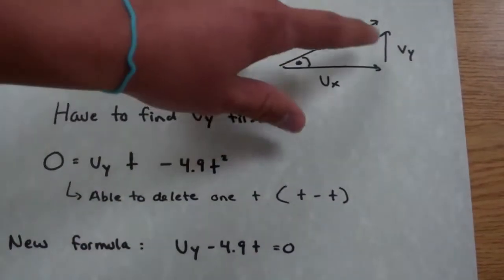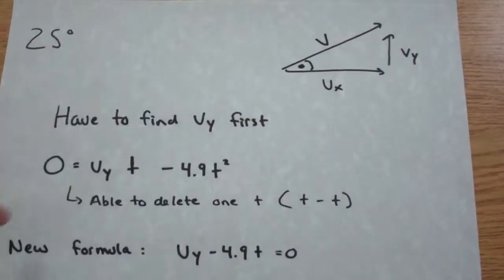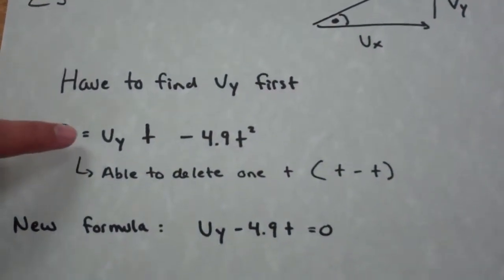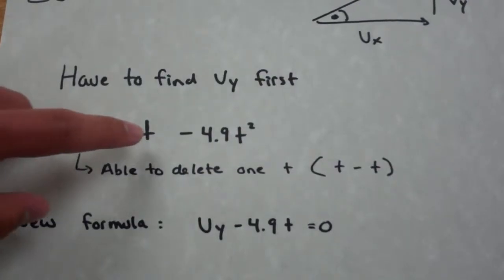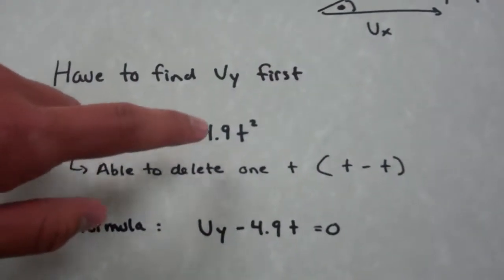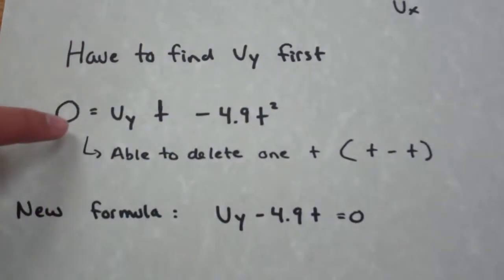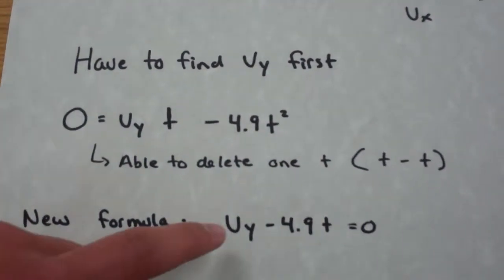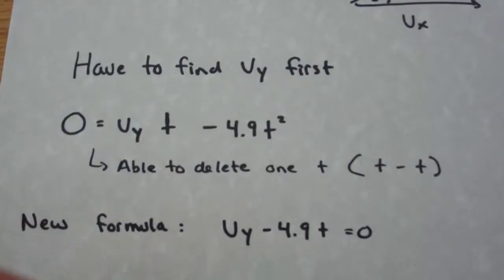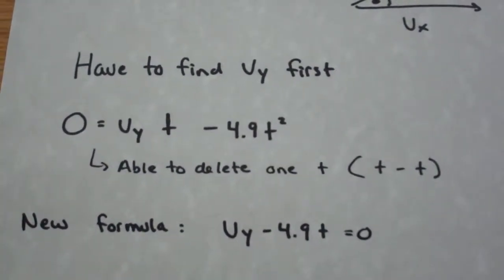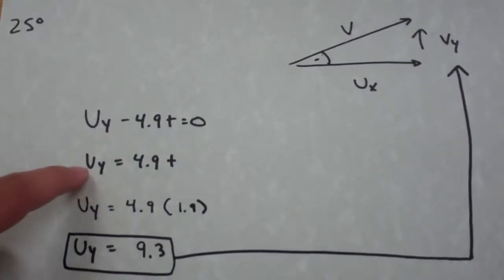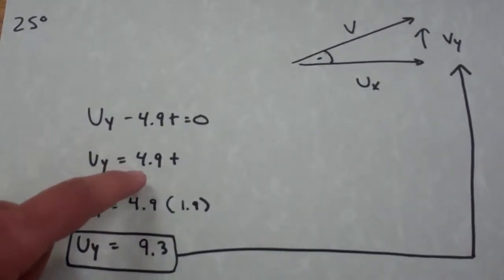The first step is to find Vy, or the vertical axis. In order to do that we will use the velocity formula of Vy times time minus 4.9, which is half of gravity, times t squared. We are able to delete one of the t's, so we get the new formula: Vy minus 4.9t equals 0, or Vy equals 4.9t.